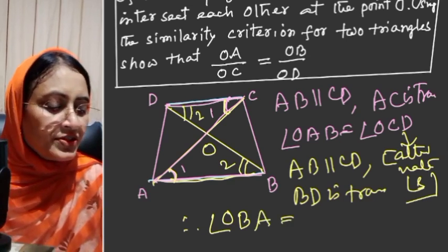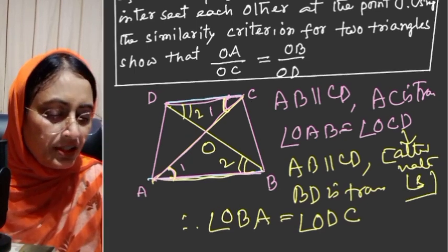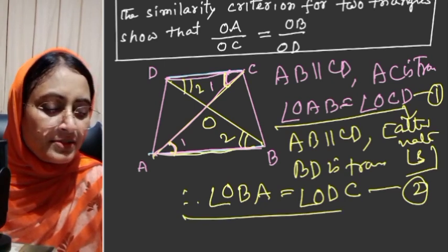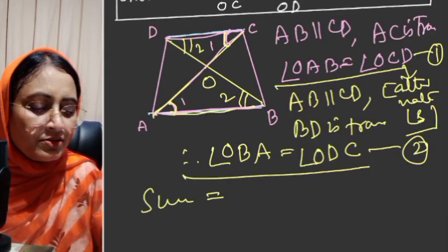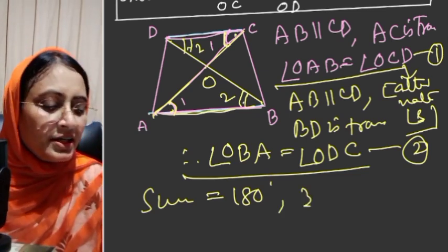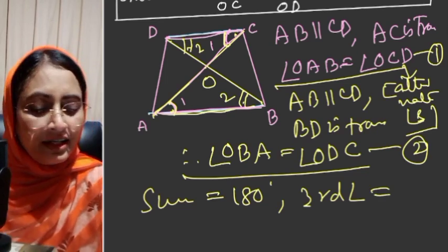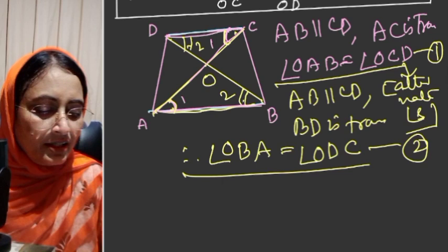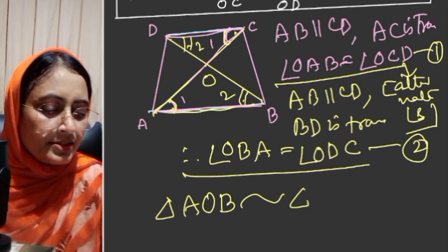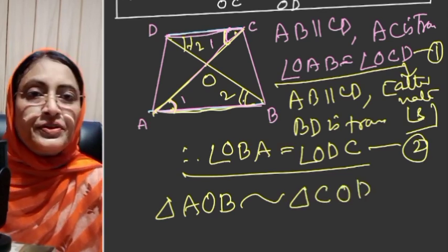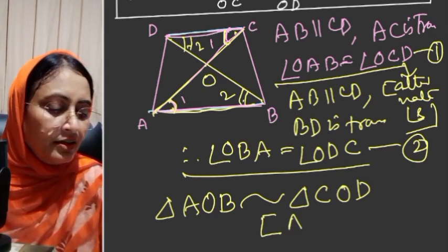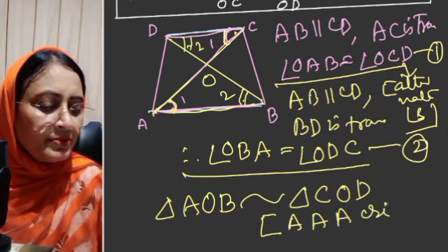So angle OAB is equal to OCD and angle OBA is equal to ODC. Two angles of triangles are equal, then the third angle must be equal, because the sum of three angles is equal to 180 degrees. Therefore triangle AOB is similar to triangle COD by angle angle similarity criteria.